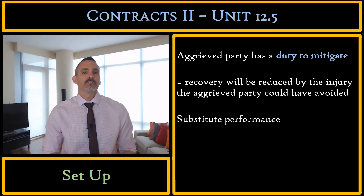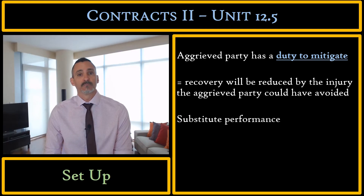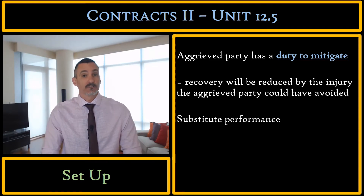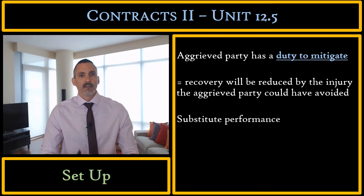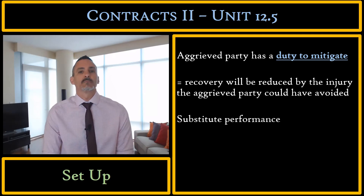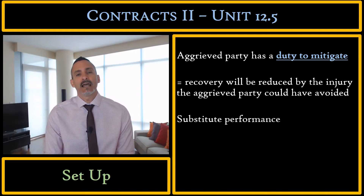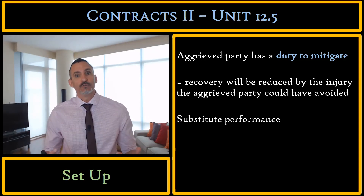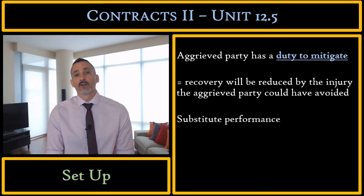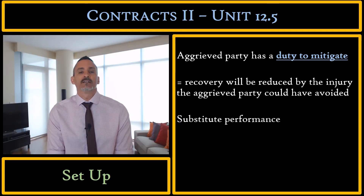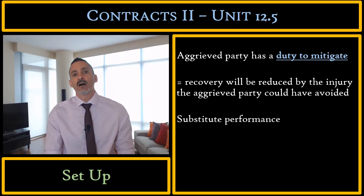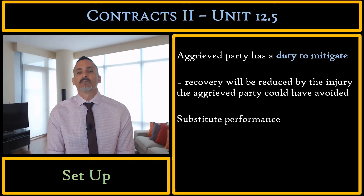How do you mitigate damages? Generally, you mitigate damages by finding substitute performance. Imagine I own a restaurant and you're a contractor I hired to repair it — it's closed during renovation. You repudiate the contract and walk away, causing a delay in reopening and lost profits. How could I mitigate? I could go out quickly and find substitute performance — find someone else to do the work. If I do not do that, and I could have, then any injury I could have avoided by finding substitute performance, I will not be entitled to recover. That is the nature of the mitigation of damages.